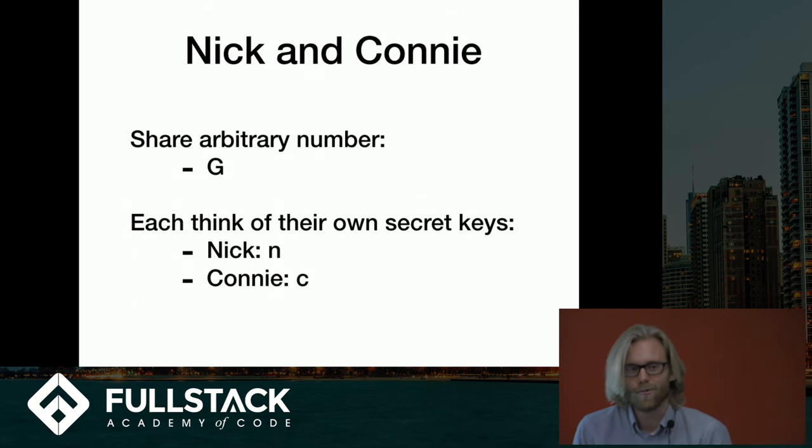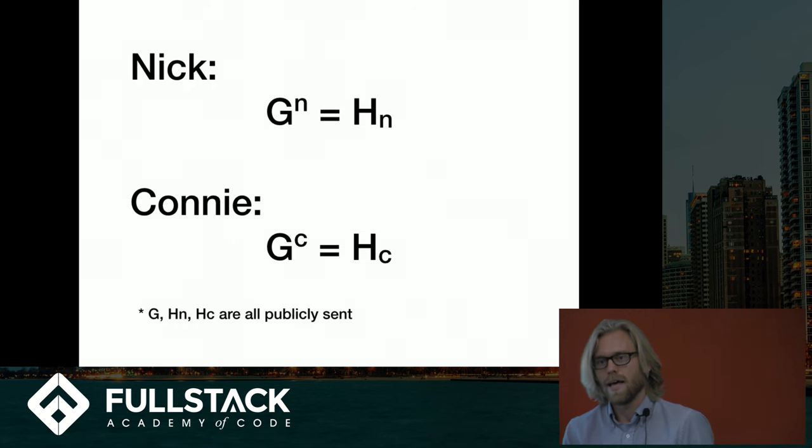Let's say we have two random people, Nick and Connie, who want to talk securely over the internet. They come up with this protocol. The first thing they do is share an arbitrary number, G. This G is sent over the internet, could have been intercepted—we don't really care. Then, each of them makes up their own secret, and they share that with nobody. They don't send it at all. We'll call that N for Nick and C for Connie. The next thing they do is take that commonly shared G and raise it to the power of their secret.